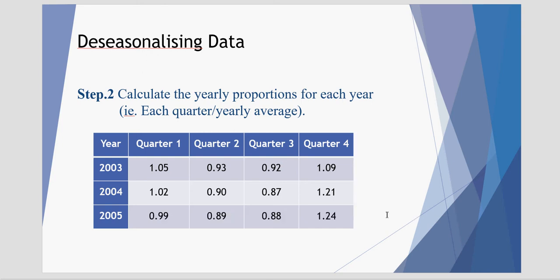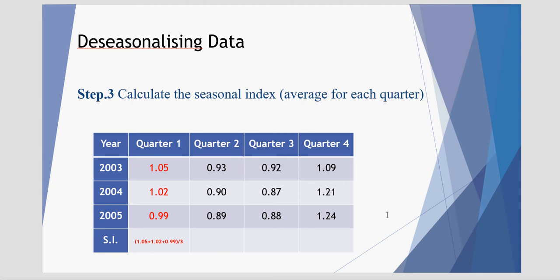To determine the seasonal index for each quarter, we simply average these yearly proportions. So 1.05, 1.02, and 0.99 average out to a value of 1.02. Quarter 2, we average these three yearly proportions of 0.93, 0.90, and 0.89.